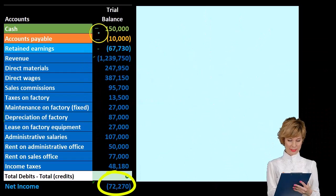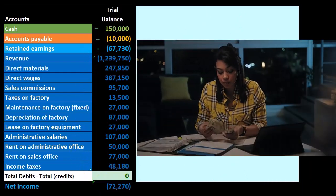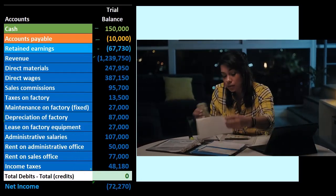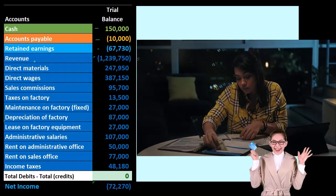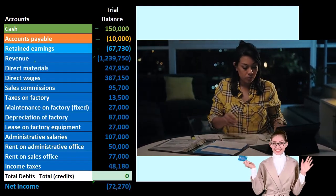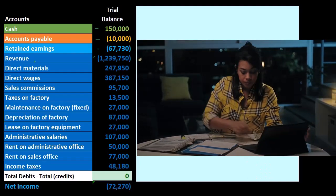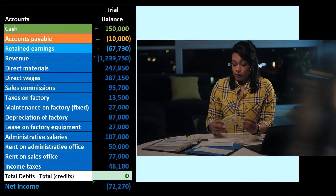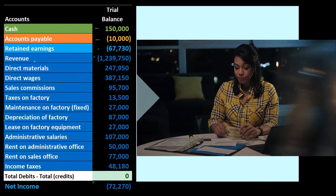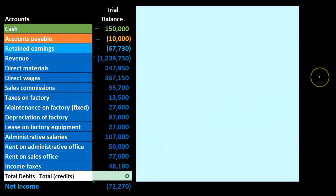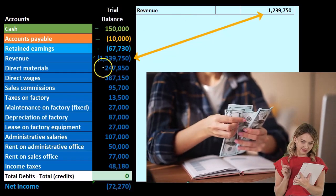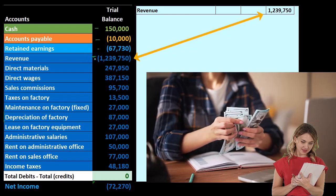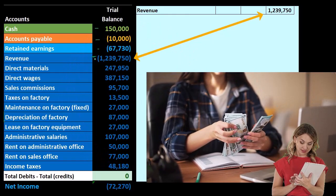All of the debits and credits from cash on down to income taxes would add up to zero — the debits minus the credits add up to zero. So we are going to take these numbers and put them into the structure of a standard type of financial statement income statement, something that would be closer to generally accepted accounting principles, then compare and contrast that to CVP or a contribution margin type of income statement in future presentations. The income statement would typically start off with revenue; for a manufacturing company it might be called sales.